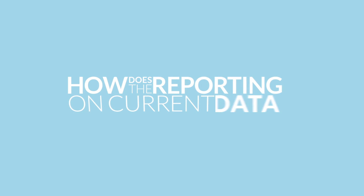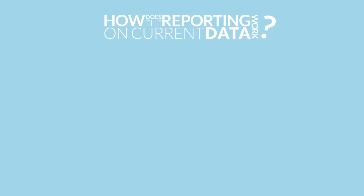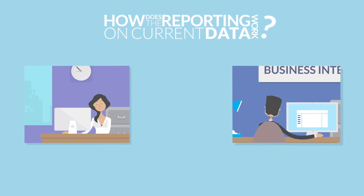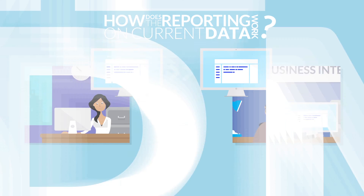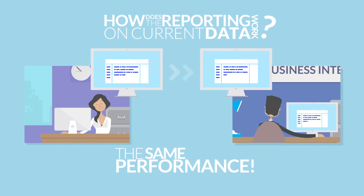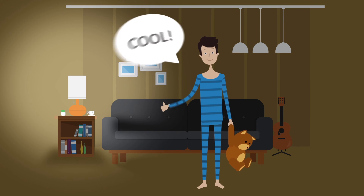How does the reporting on current data work? When you turn on the replication between the transaction system and the reporting system, the data from the transaction system is replicated to the reporting system in real-time. Thanks to an innovative approach and reading data from the log files, this is done without additional load to the source database, and the users of the transaction system do not notice any difference while working with the application. The data in the reporting system are exactly the same as in the transaction system at any given moment in time, so the reports are created on the basis of current data. There is no need to load data into the reporting system during late-night hours.